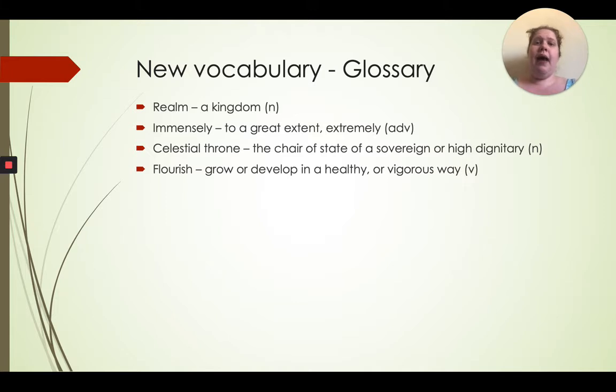Four new bits of vocabulary today. Get your glossary ready. Realm is a kingdom, some of you might have a realm in Minecraft, that's a noun. Immensely is a way of describing something, it's an adverb, to a great extent or extremely. Celestial throne, the chair of state of a sovereign or high dignitary, a big throne is really important, that's a noun. And flourish, that's to grow or develop in a healthy or vigorous way, it's a verb.